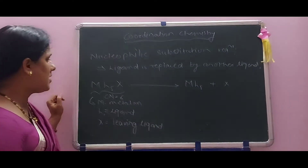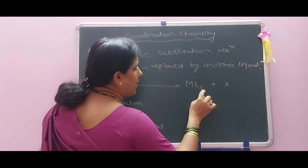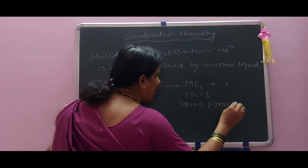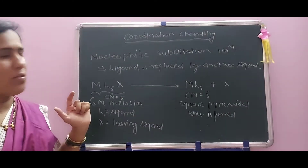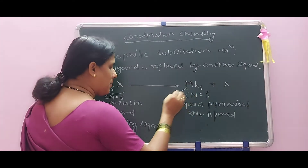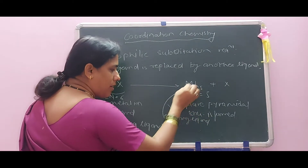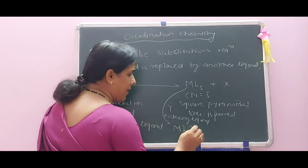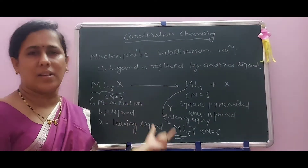In the second step, another ligand Y — called the entering ligand — associates with ML₅, forming ML₅Y with CN = 6 again, restoring the octahedral complex. This fulfills the definition: a ligand of the complex is substituted or replaced by another ligand.